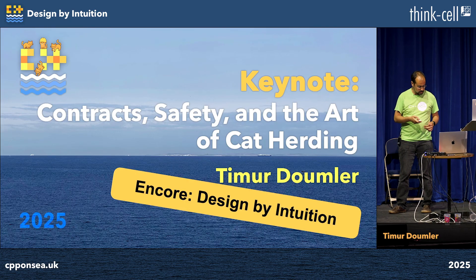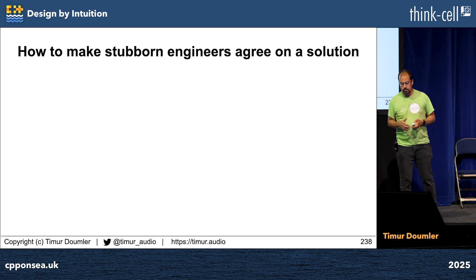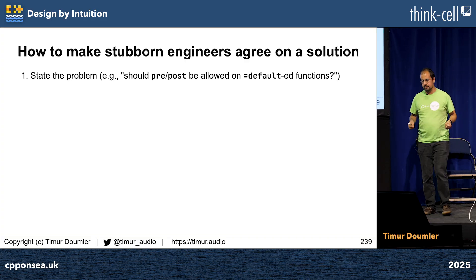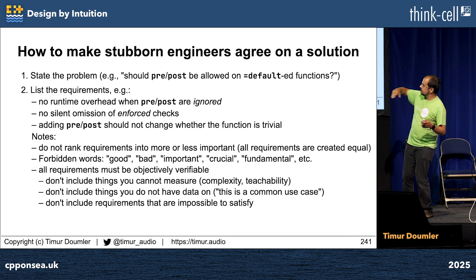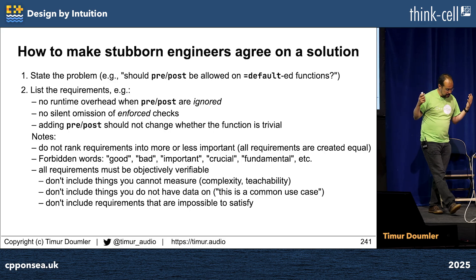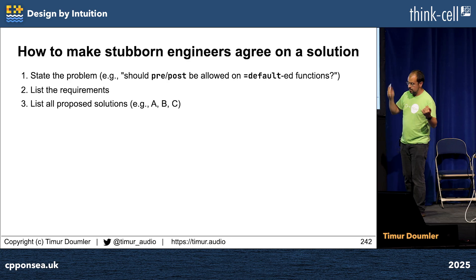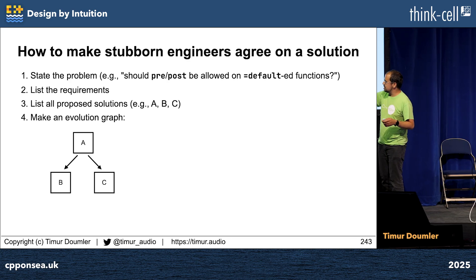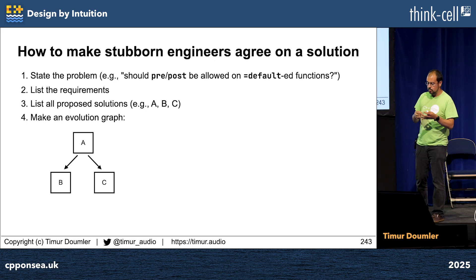Recap. So I had this little algorithm for how to make stubborn engineers agree on a solution, which consists of: state the problem, list the requirements — and there's a bunch of stuff you need to remember when you list the requirements. Then you list all the proposed solutions, A, B, and C for example. Then you make an evolution graph — for example, A can be evolved into B or C, but B and C are not mutually compatible, so you need to choose between them.